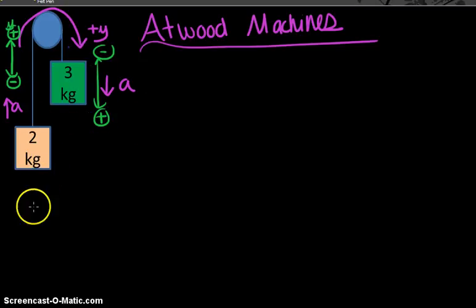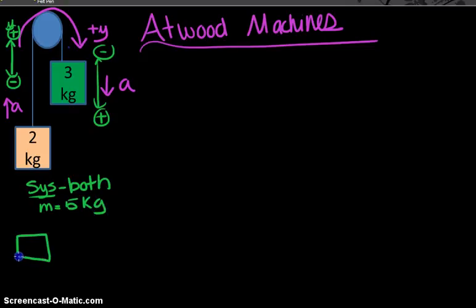Now that I have all that set up, the next step for me is I usually like to analyze the system of both blocks, and this is going to require me to combine the masses. So that's a five kilogram total mass, and the pulley basically changes the direction of the force. I just like to kind of straighten this Atwood machine out when I think about it.